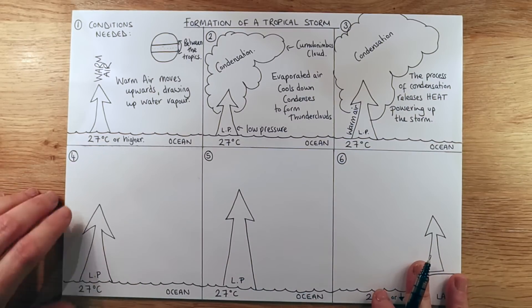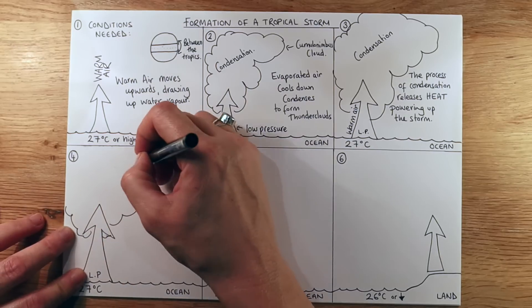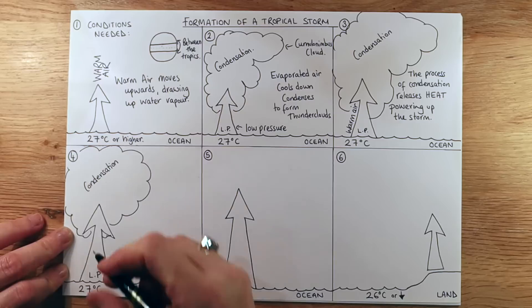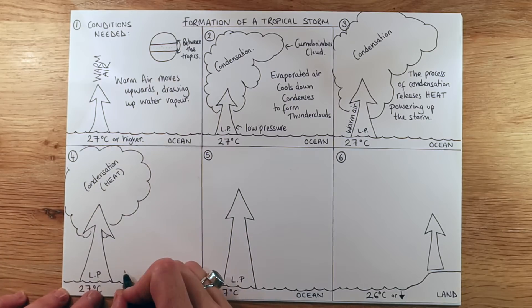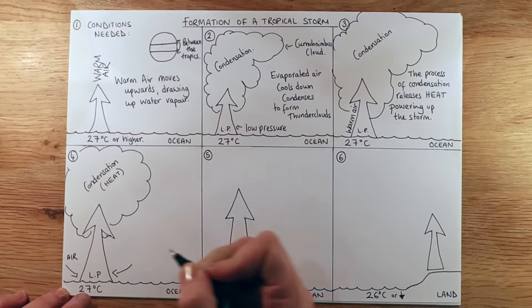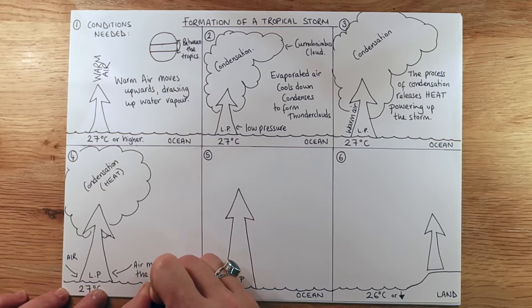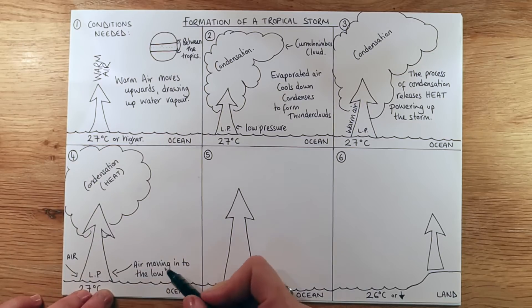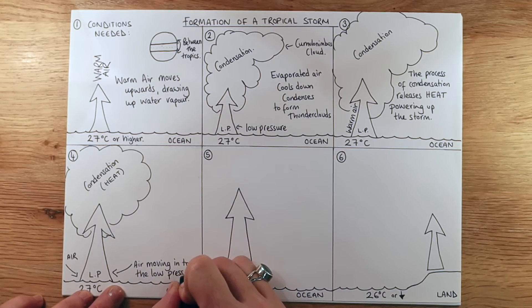Moving on to stage four, we've still got our big thundercloud and still got that condensation happening with heat being released. We've got a big low pressure system, and now air is actually moving in, drawn into that low pressure area. Because the Earth likes things in balance — where there's low pressure, air is sucked in to fill the void.